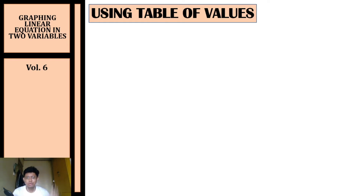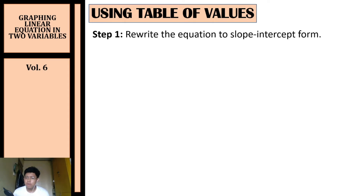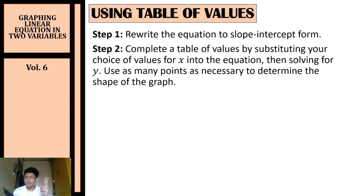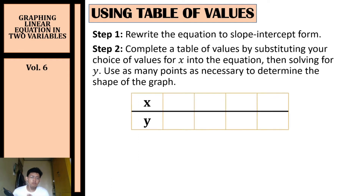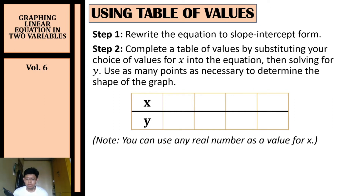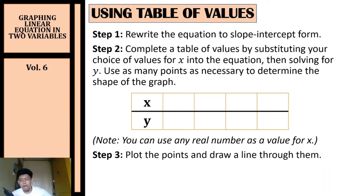Here are the steps in graphing linear equations in two variables using table of values. Step one: rewrite your equation to slope-intercept form. Step two: complete a table of values by substituting your choice of x values into the equation — you can use any real number. Use as many points as necessary to determine the shape of the graph. Step three: plot the points and draw a line through them.